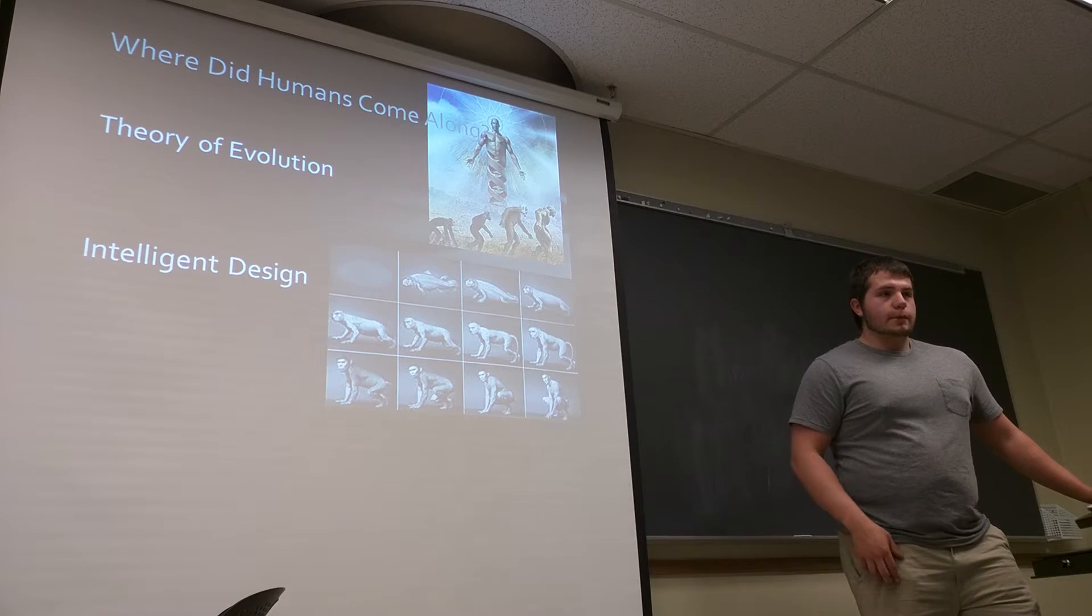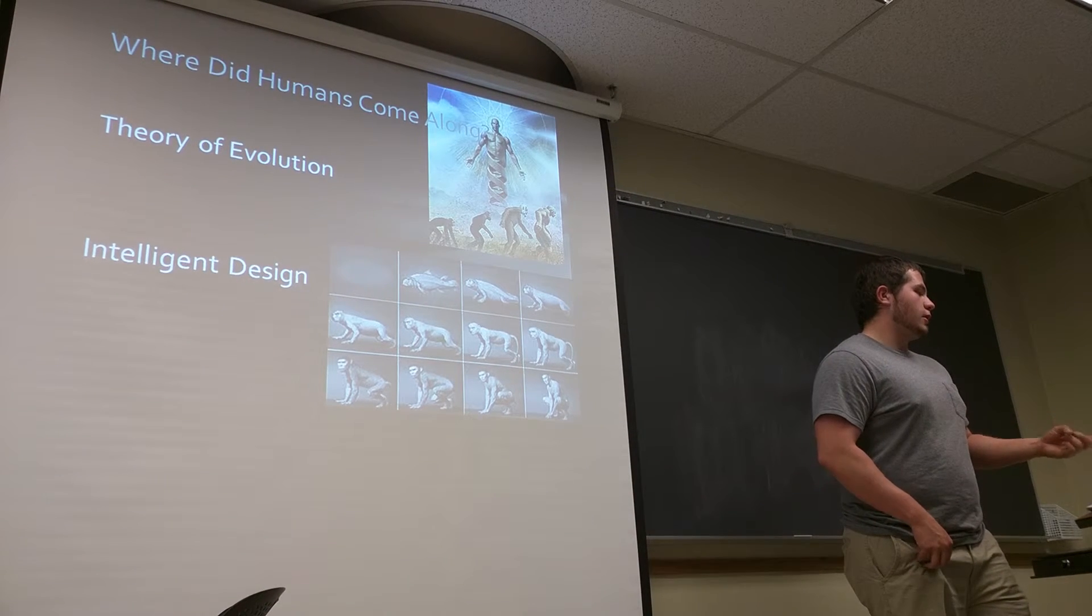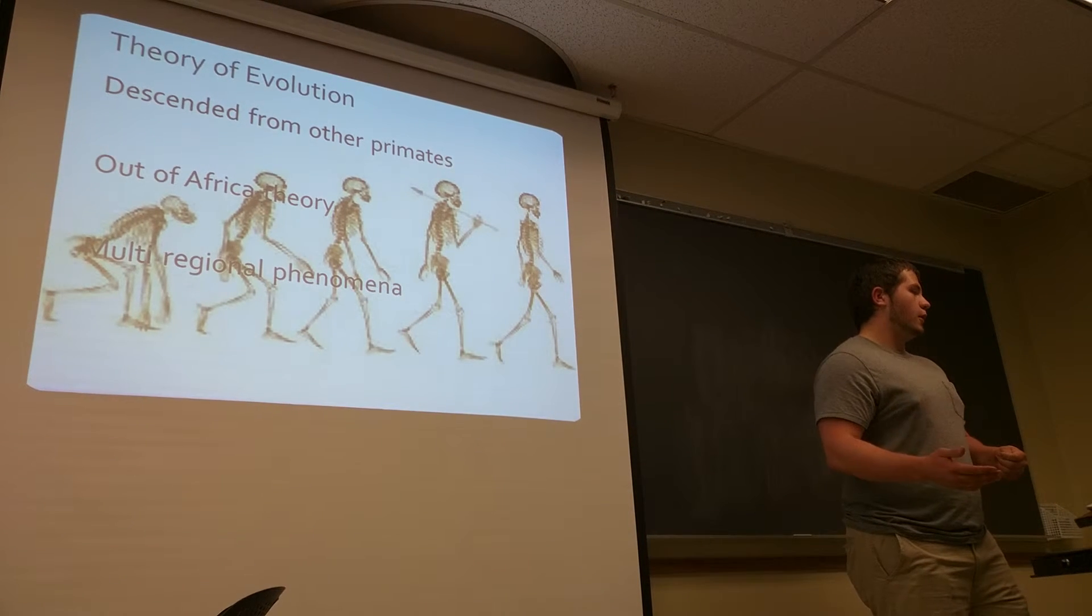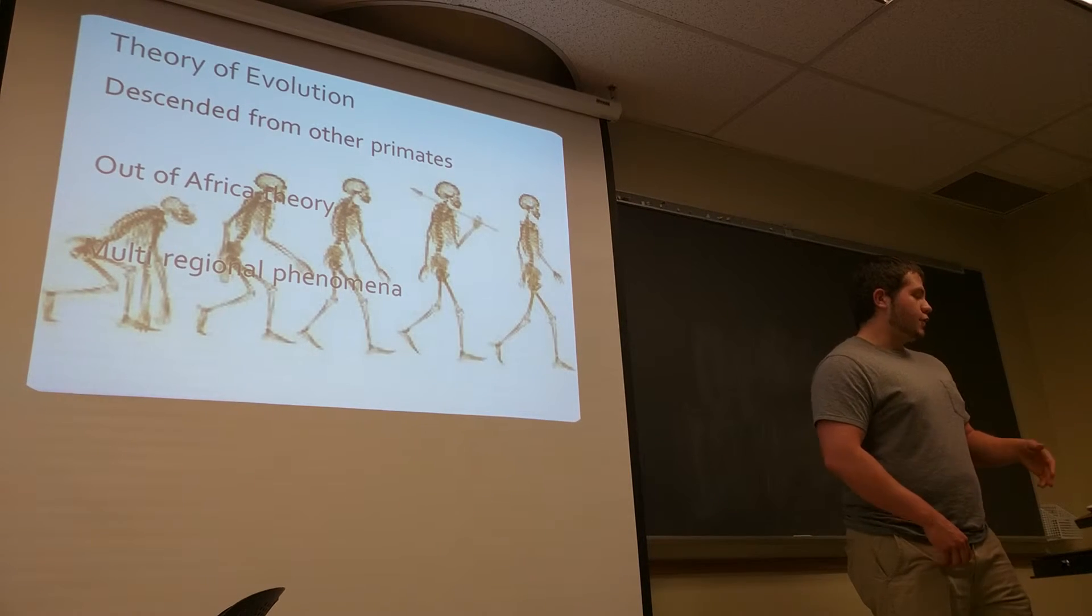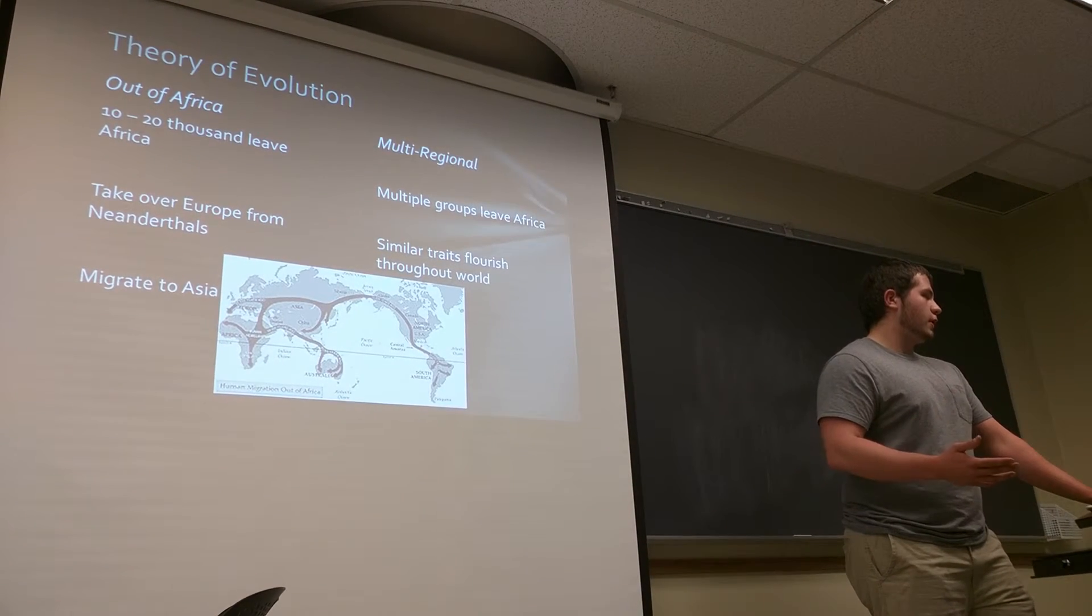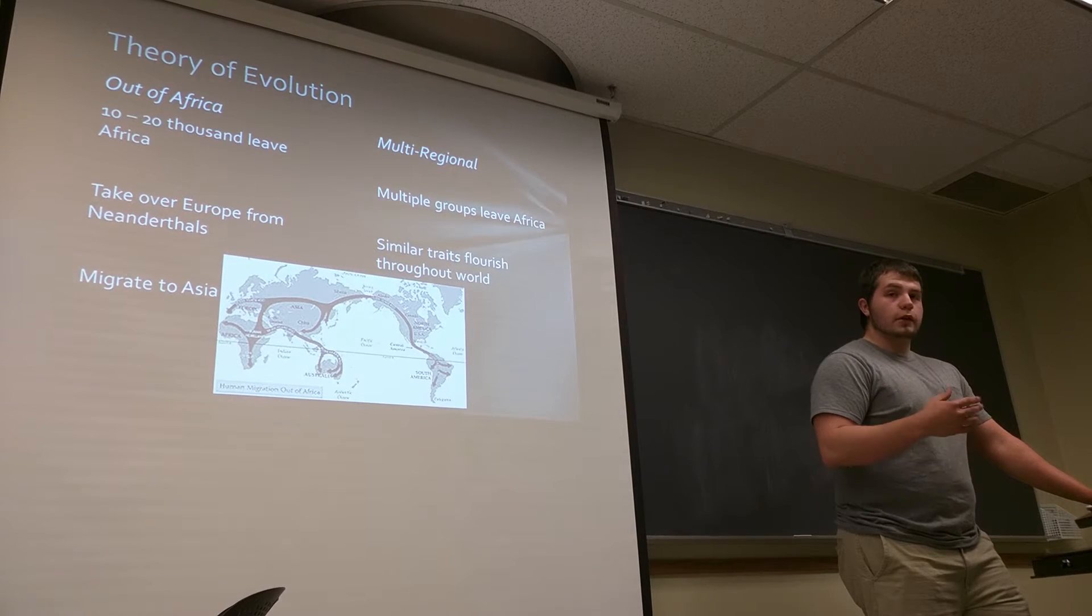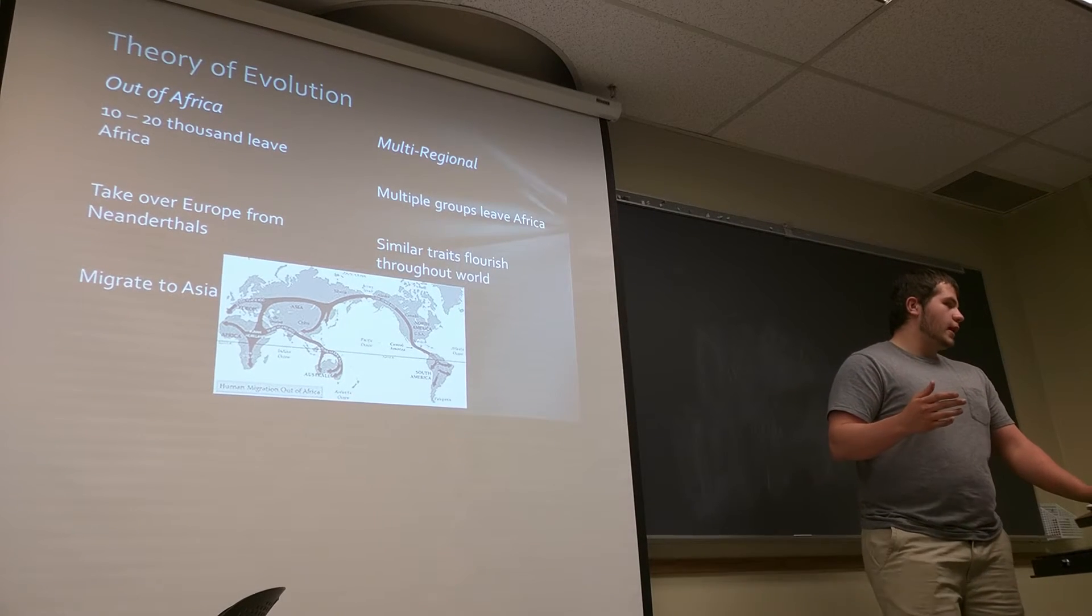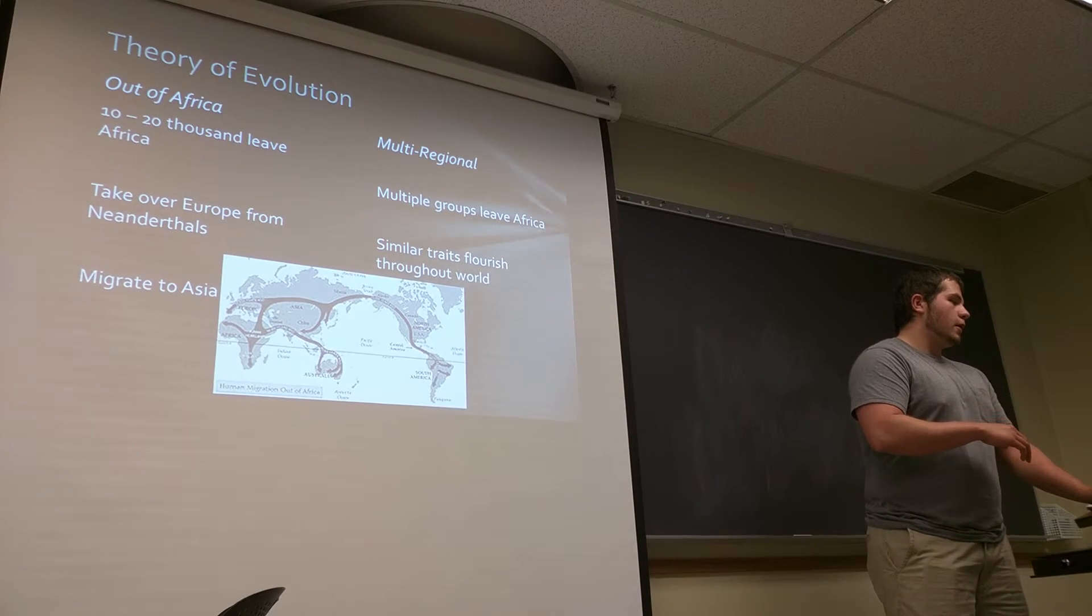So, where did humans come along from simple RNA like that and simple one cell organisms? Well, there's two theories that come about, the theory of evolution and then intelligent design on Earth. The theory of evolution, we've all heard about it. Basically, it was developed by Darwin and it said that after multicellular organisms came up, we descended from primates and there's two branches of theory of evolution as to how humans came to populate the rest of the Earth. One is called the Out of Africa Theory. Basically, it follows this little map on the bottom that says life started in Africa and the earliest ancestors of humans started there. Pretty much a mob of about 10,000 to 20,000 left Africa went into Europe. They completely wiped out the Neanderthals and became the dominant species on the planet.